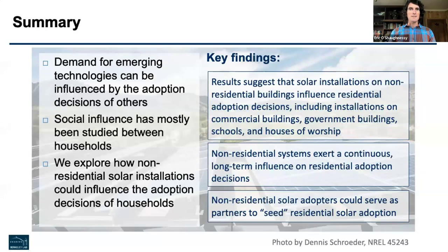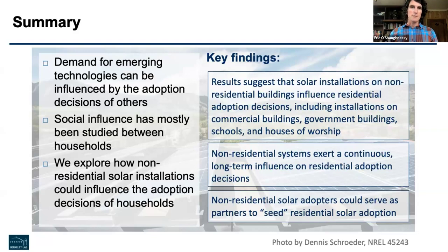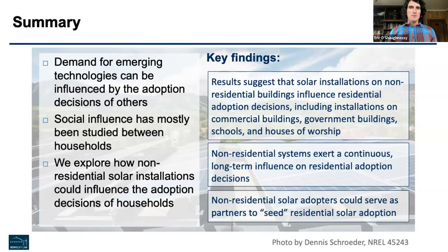To summarize the key findings: yes, we find rather persuasive evidence that systems installed on non-residential buildings can influence — i.e., increase — residential adoptions. We look specifically at commercial buildings, government buildings, schools, and houses of worship, and find evidence of influence across all those building types. We also find that this influence is a continuous, long-term process, and that non-residential solar adoptions could serve as a seed for residential solar adoption.